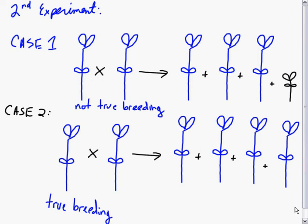These were not true breeding, but he could also get some pea plants that were both tall that were true breeding, and all of their offspring would be tall.